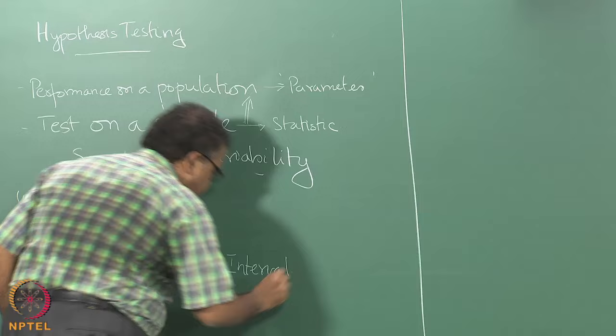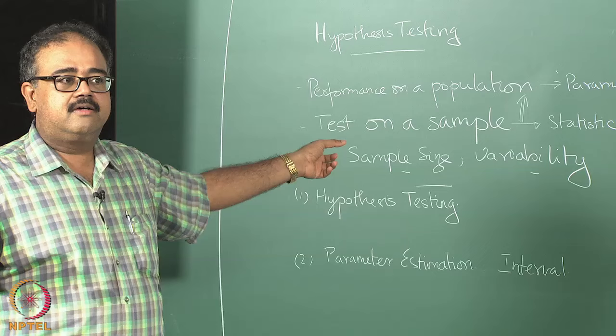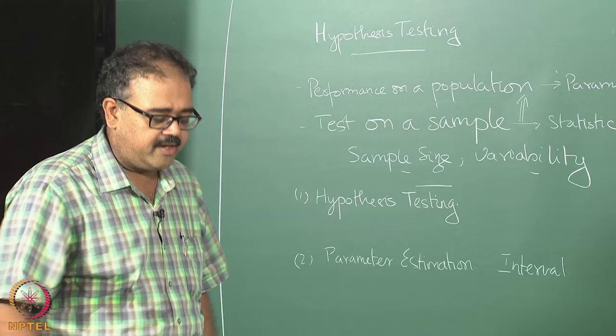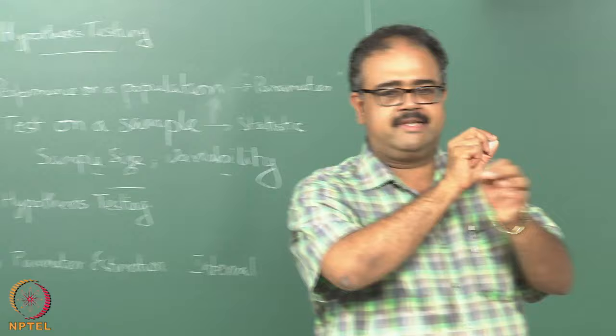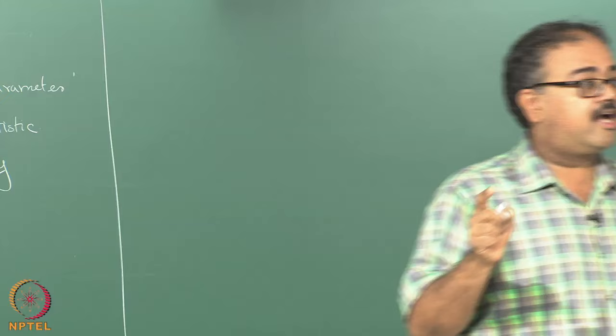In parameter estimation, I look at some confidence interval around my statistic and tell you that with some amount of confidence, the true parameter lies in that interval. For example, I run my tests on sample data and get a performance of 3.3 seconds, and then say it is 3.3 plus or minus 0.5 seconds — meaning the true mean will lie somewhere in that interval with high probability.